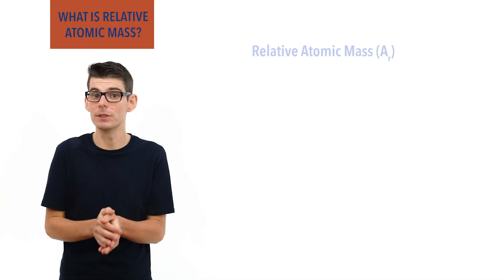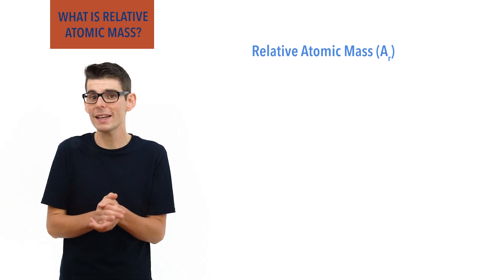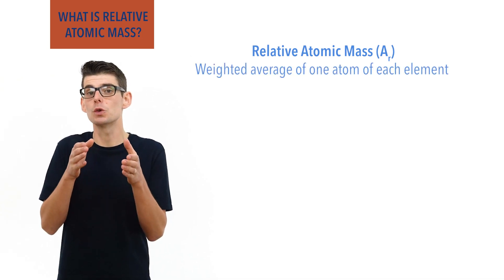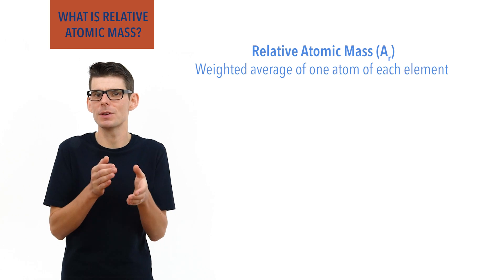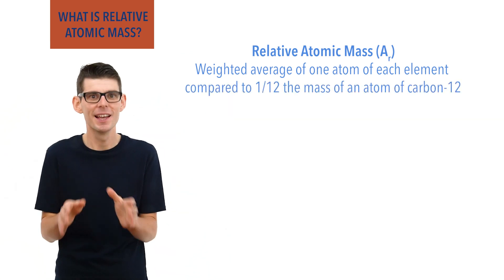Relative atomic masses of elements are now described as the weighted average of one atom of each element compared to one twelfth the mass of an atom of carbon 12. This sounds really confusing. Let's break it down.